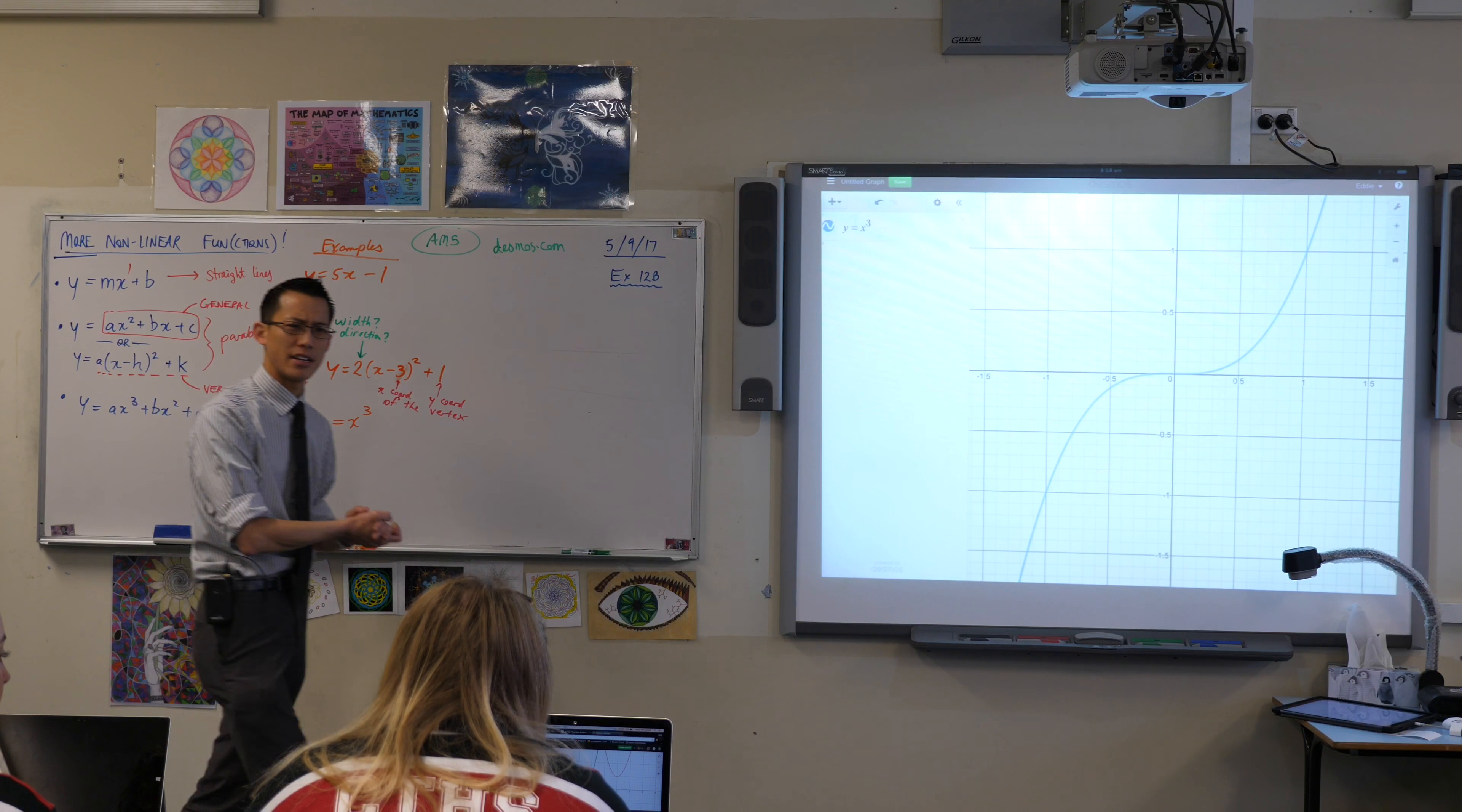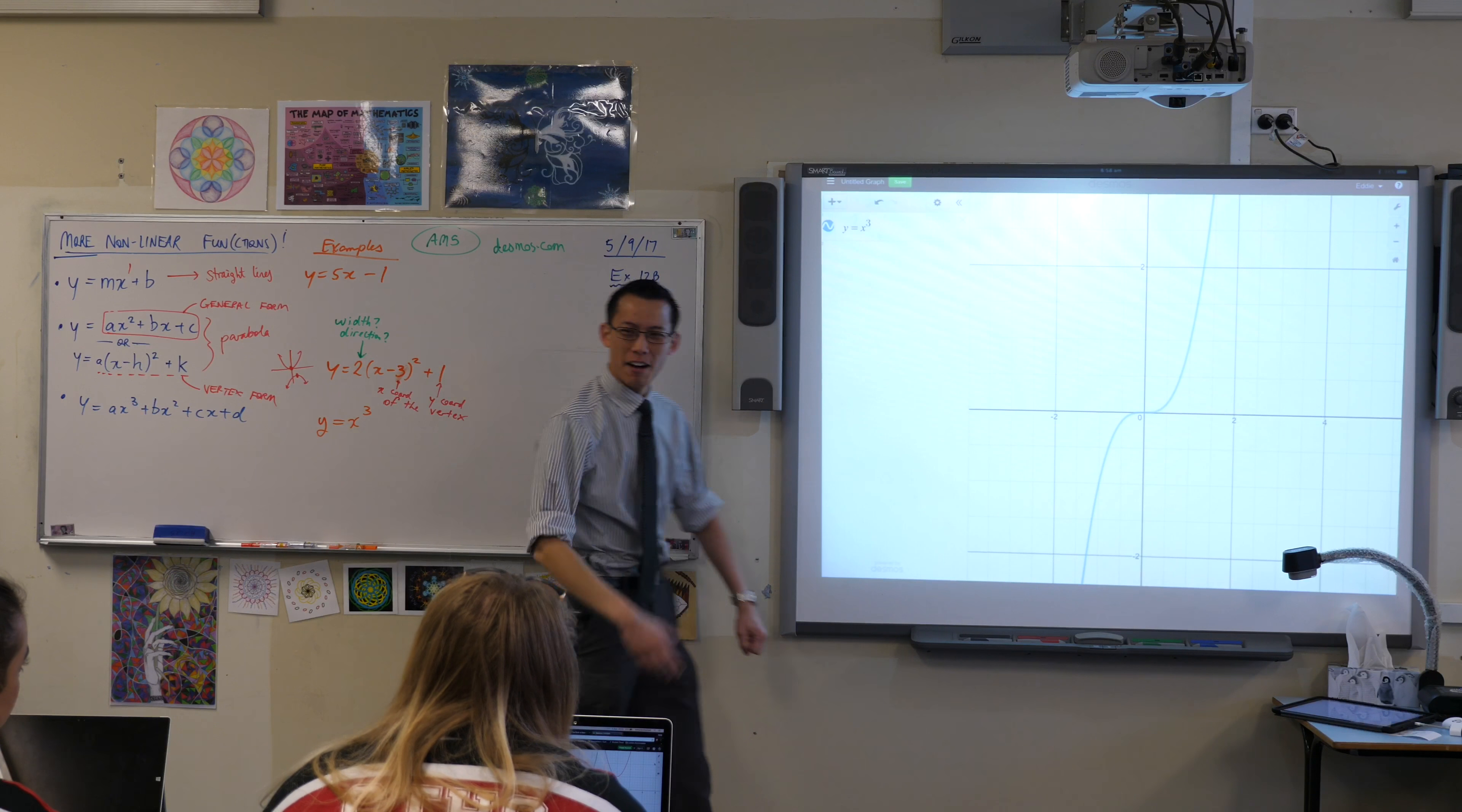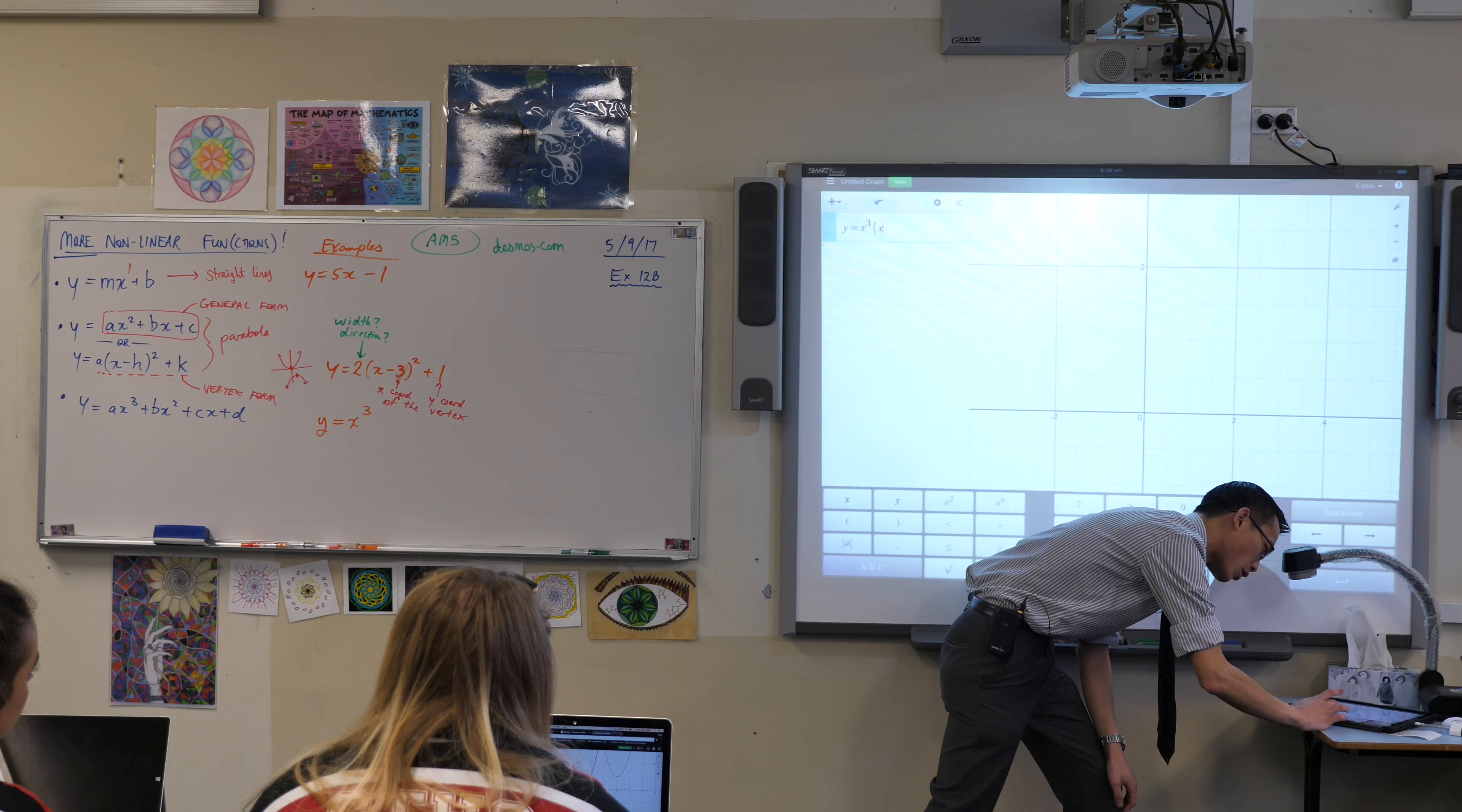There we go. So here's our cubic curve. It bears some similarities to a parabola, which we've looked at before. What kind of similarities can you see? Great. So, it fits our definition, it's not linear, that's good.